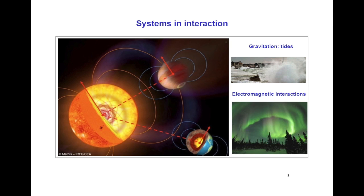To set the stage: we want to understand systems in interaction, and in our daily life we have everyday examples of the two main interactions — radiation of the star and the Moon in the case of the Earth. The first one is a gravitational interaction which leads to tidal interaction between planets, their moons if any, and the star. This gives angular momentum transfer between the components and modifies the rotational and orbital evolution.